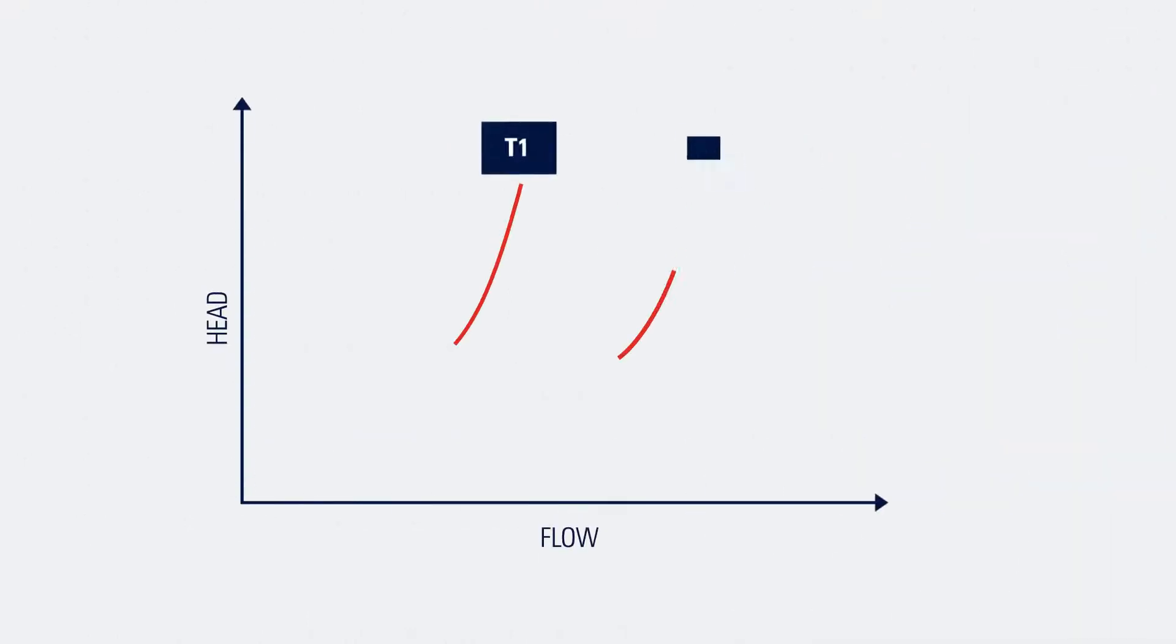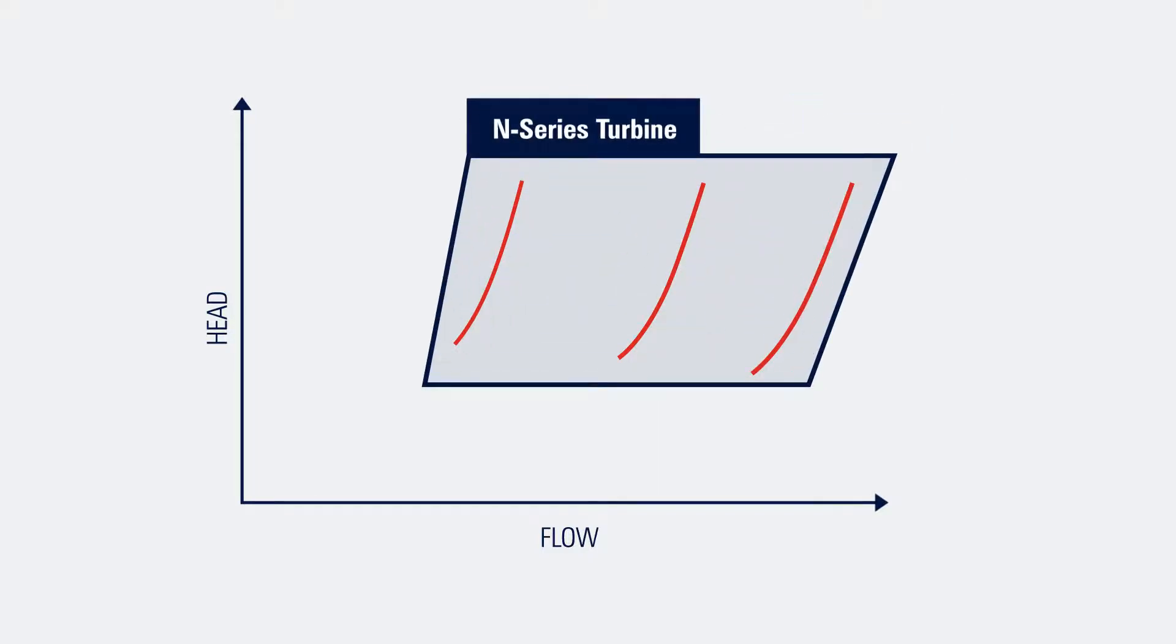This means that one Gilkes N-Series turbine can cover the range of two or potentially three off-the-shelf PATs while maintaining its higher efficiency throughout the operational range.